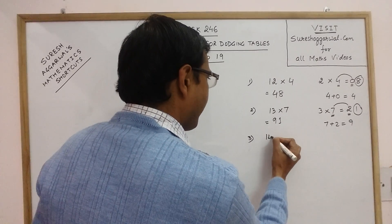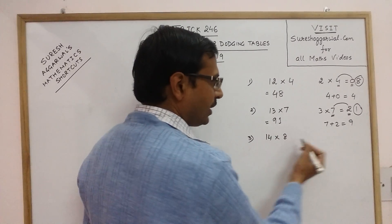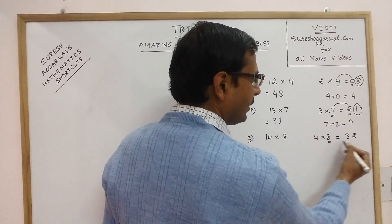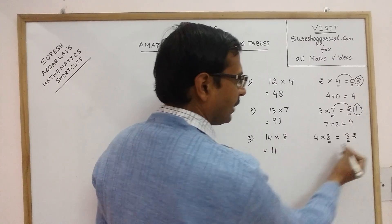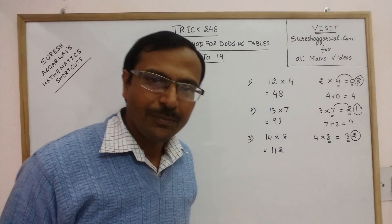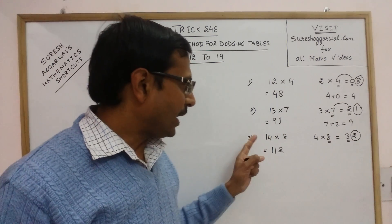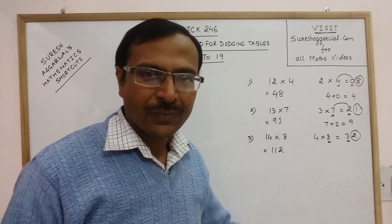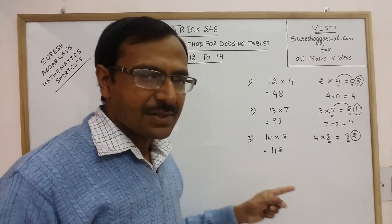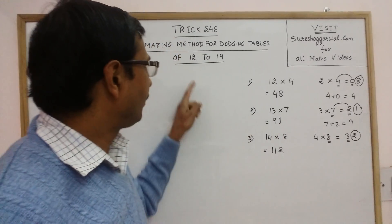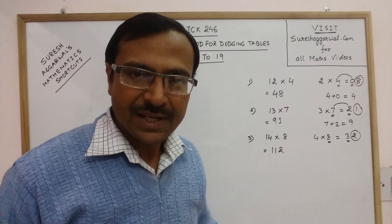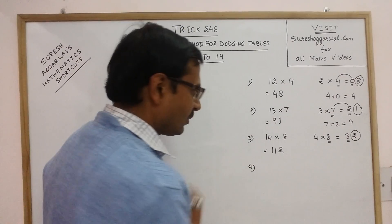Now see 14 into 8. Just write 4 into 8. Now 4 into 8 is 32. Add the intermediate terms. 8 plus 3 is 11. And what is the last term? 2. So 112 is the answer. See how much time it takes to write 14 into 8 through this method? I think through a practice of 5 to 6 minutes you can master this concept and write any product of numbers from 12 to 19. That is in only 2 or 3 seconds.